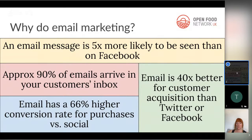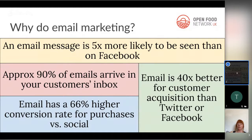This is to do with the algorithm on social media platforms, where essentially they control what posts their users see — posts are ranked and delivered based on what the user is likely to enjoy, so a lot of what you post on social media isn't actually seen. With email you're much more likely to reach the people you want. Research shows email has a 66% higher conversion rate for purchases versus social media, meaning customers are 66% more likely to respond to an order cycle reminder by email than by a social post.